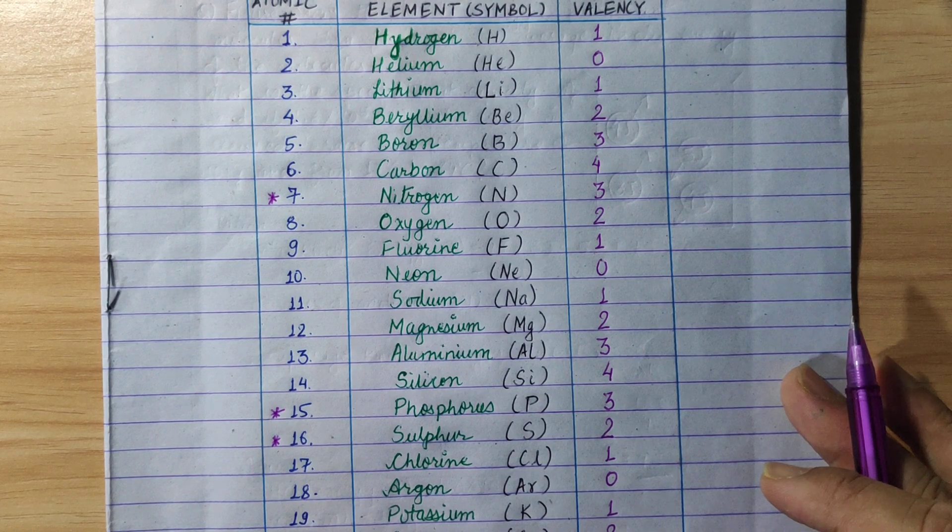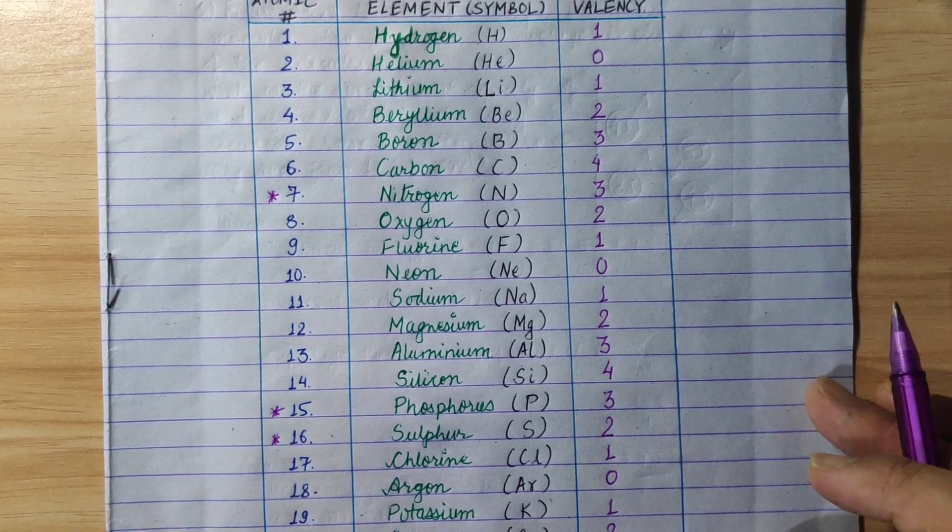If we follow this pattern, we will learn the 20 elements within 2 to 3 minutes.